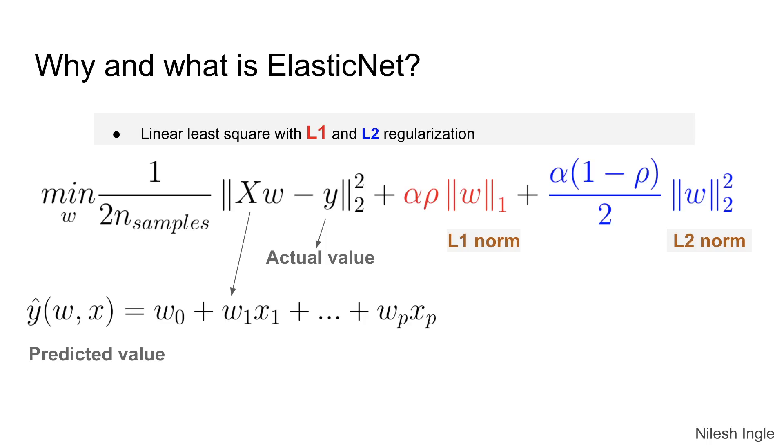So ElasticNet, the objective function looks like this as shown in this figure. It has two parts: one is the L1 norm as well as the L2 norm. And as previously we have seen that in ridge regression we have the L2 norm only, and in lasso regression we have the L1 norm.